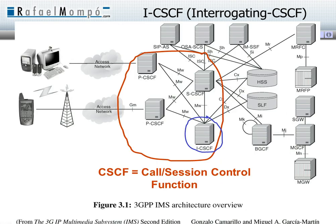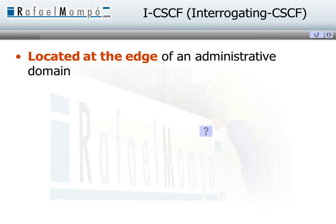Another element is the interrogating call session control, circled in blue. It is located at the edge of an administrative domain, which means that this element is the first point of contact for peer IMS networks.